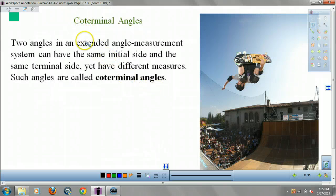Coterminal angles. Coterminal angles are two angles that are the same, but they have different measures. There's a skateboarder over here, right? In fact, that's a famous one. That guy's name is Tony Hawk. He was the first person ever to land a 900.